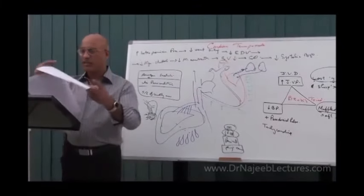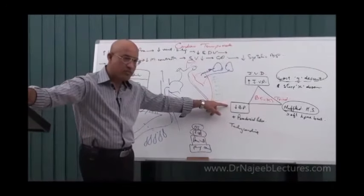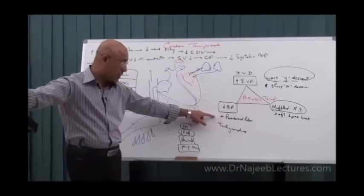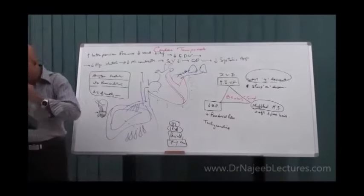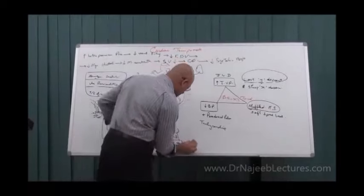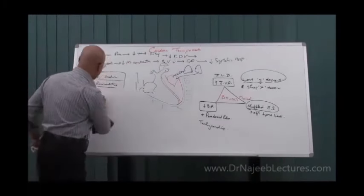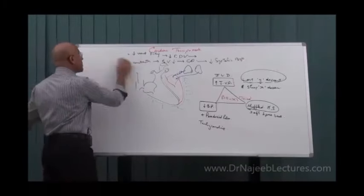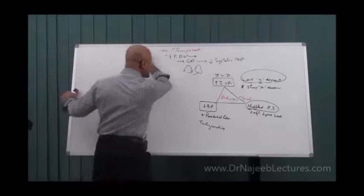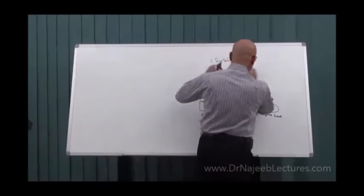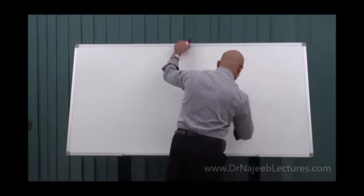I will go into detail of pulsus paradoxus. As I told you, with falling blood pressure, pulsus paradoxus is a very important clue to this condition. Now, what is pulsus paradoxus? Before I go to pulsus paradoxus, I want to explain a very important physiological concept related with the respiratory cycle and arterial blood pressure, and then I will tell you what is pulsus paradoxus.